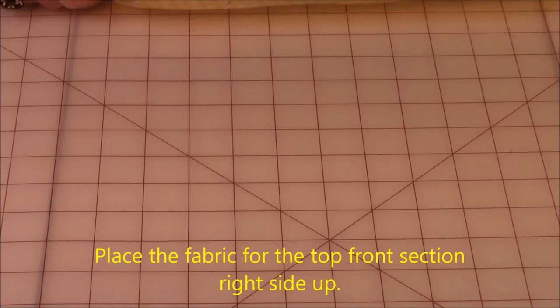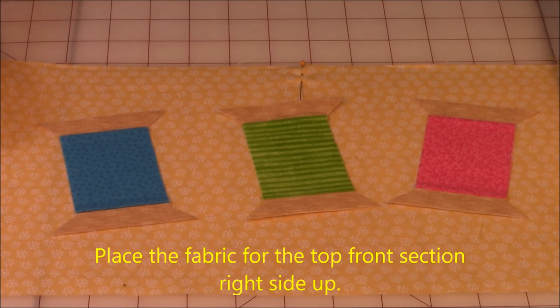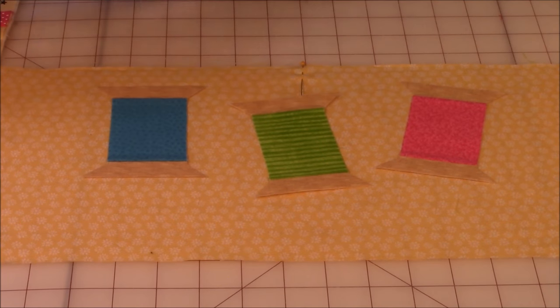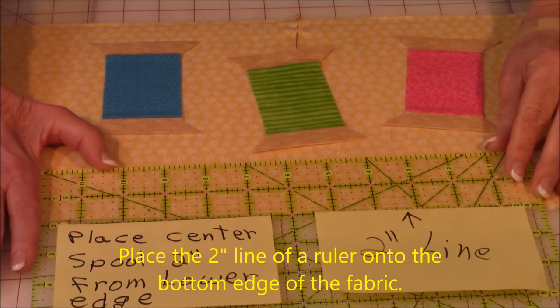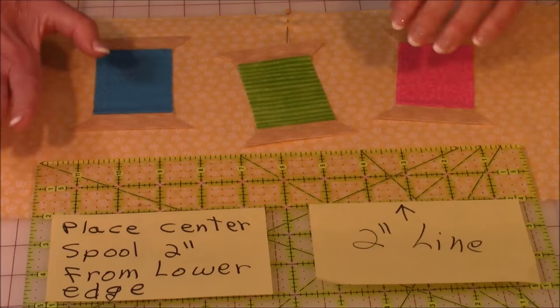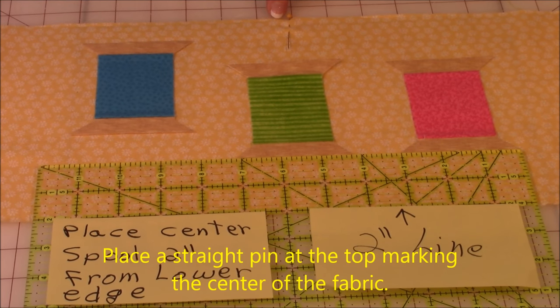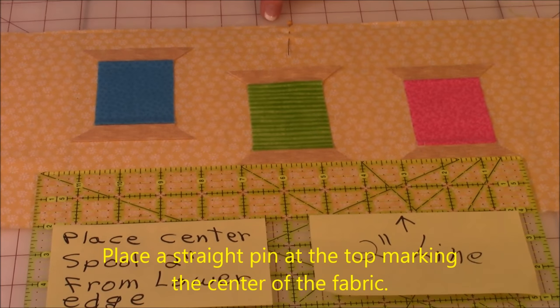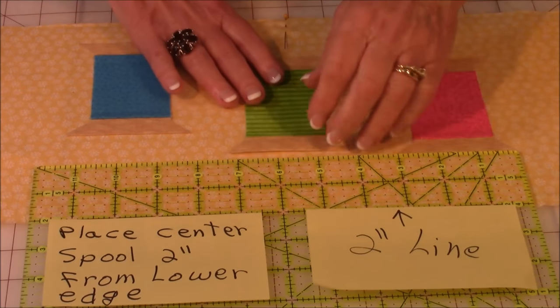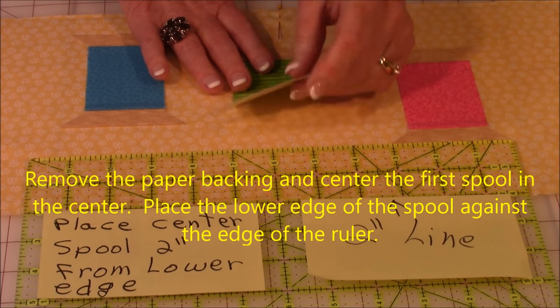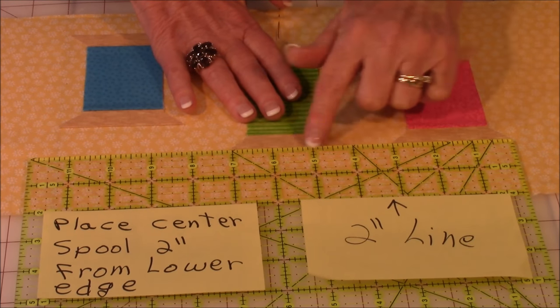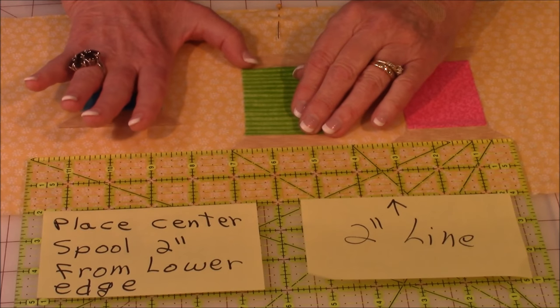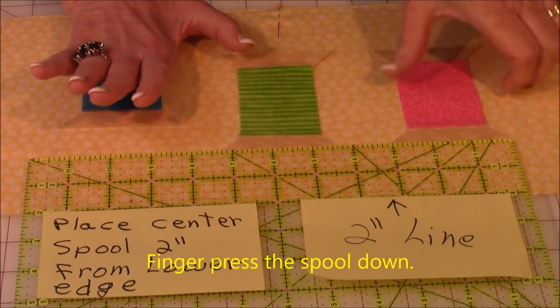Now take the fabric that was for the top front. Take a ruler and place the two inch line along the lower edge. Line it up. Also place a pin up at the top that indicates the center. My center is nine and a half. Remove the paper backing. Center it. And line it up along the lower, along this edge of the ruler. Once you have it lined up, then finger press it down.